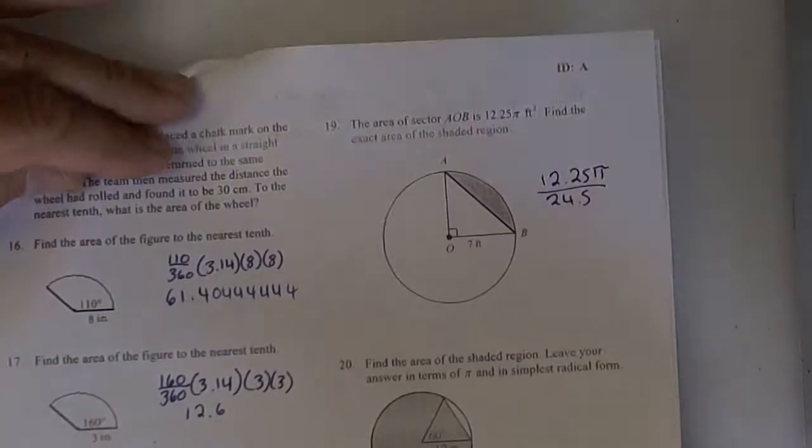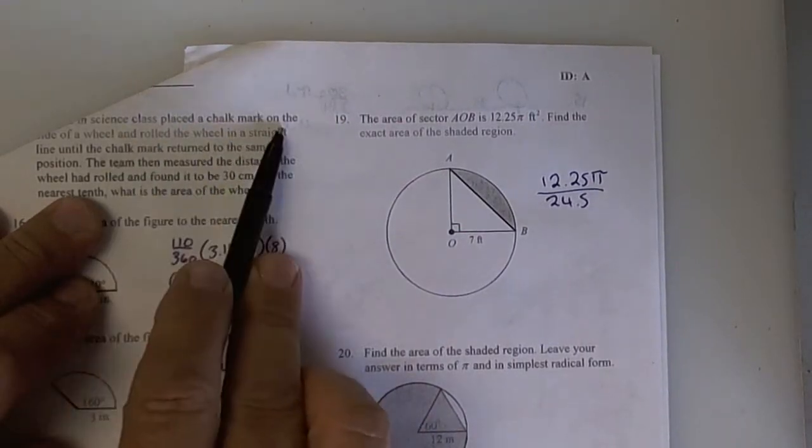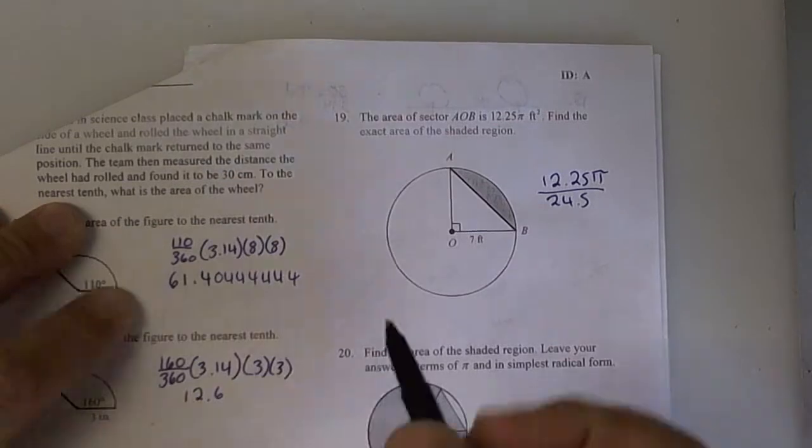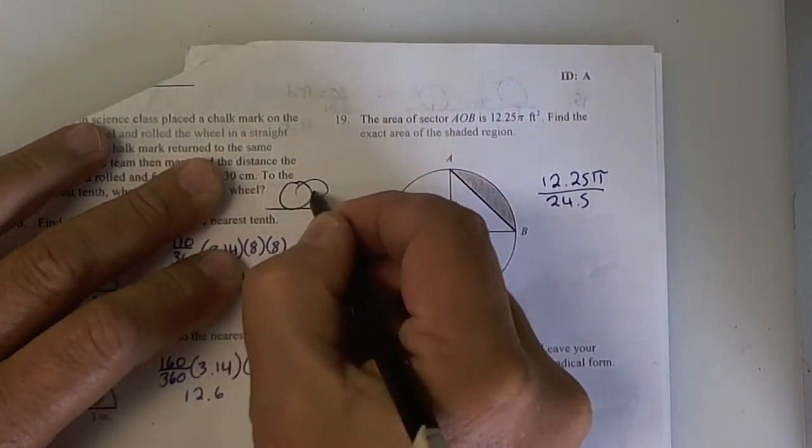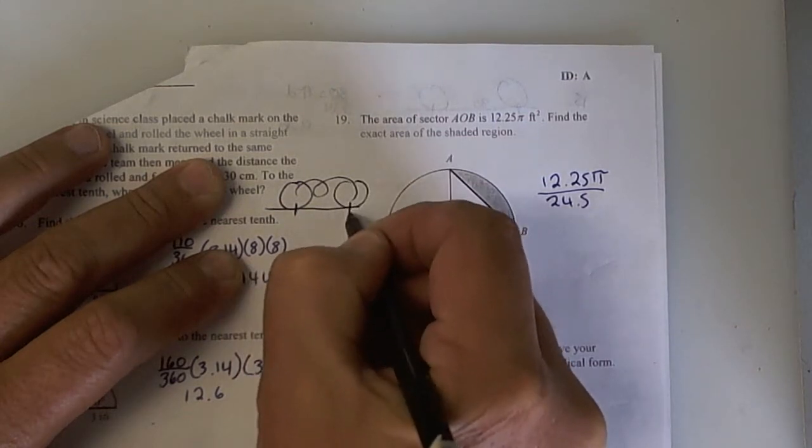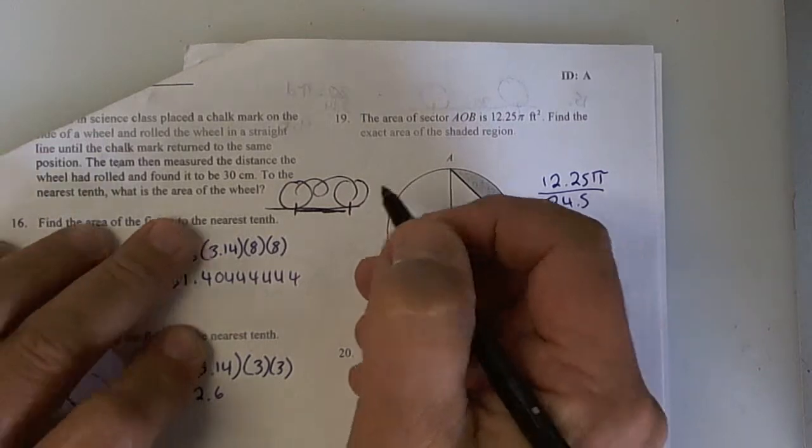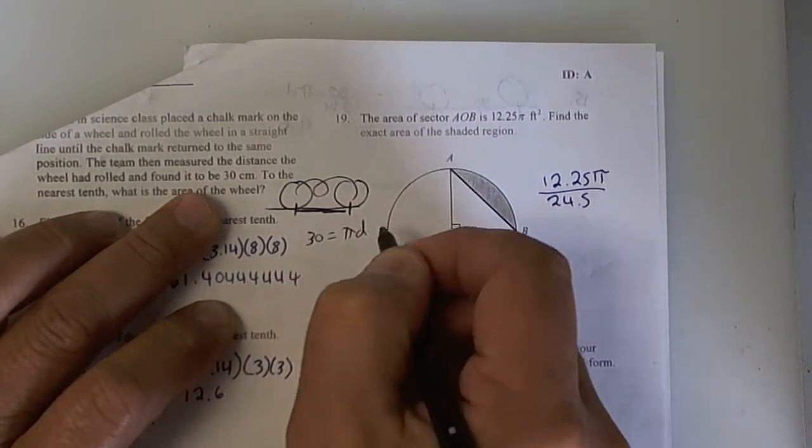Number 15. Number 15, again, this one was on there, okay? It says they, let's see, let me make sure. They took a wheel, they rolled it, and they measured 30 centimeters. So here's your wheel, which is a circle. And they rolled it. They marked it, and they rolled it until the mark came down again. And they measured 30 centimeters. That's circumference. So circumference, which is 30, equals pi times diameter.